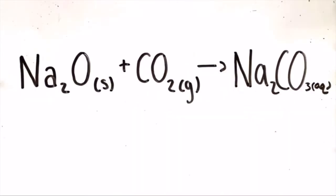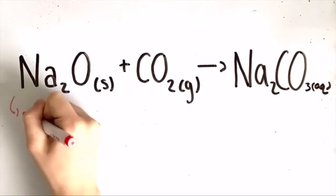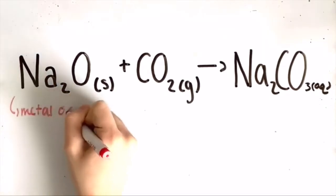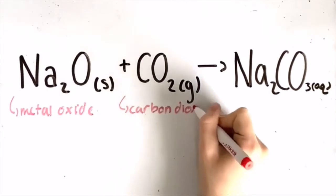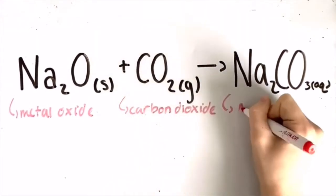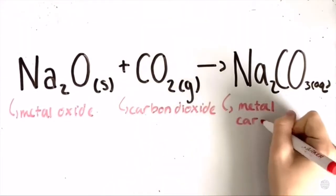Finally, a metal oxide plus carbon dioxide yields a metal carbonate. For example, sodium oxide plus carbon dioxide yields sodium carbonate. Sodium oxide is our metal oxide, and CO2 is carbon dioxide, and it yields sodium carbonate, which is our metal carbonate.